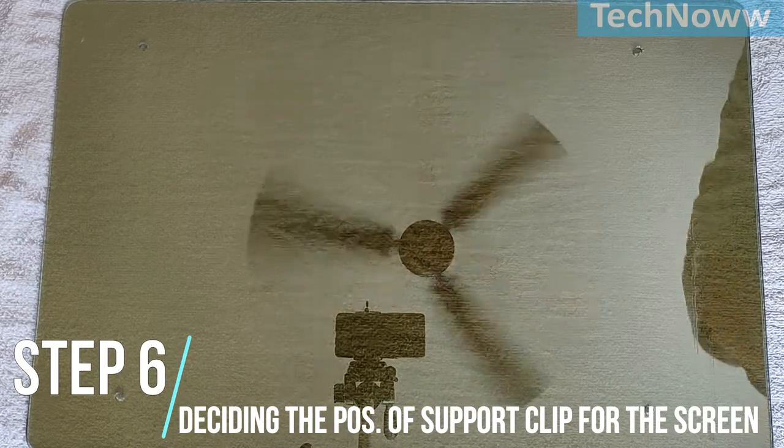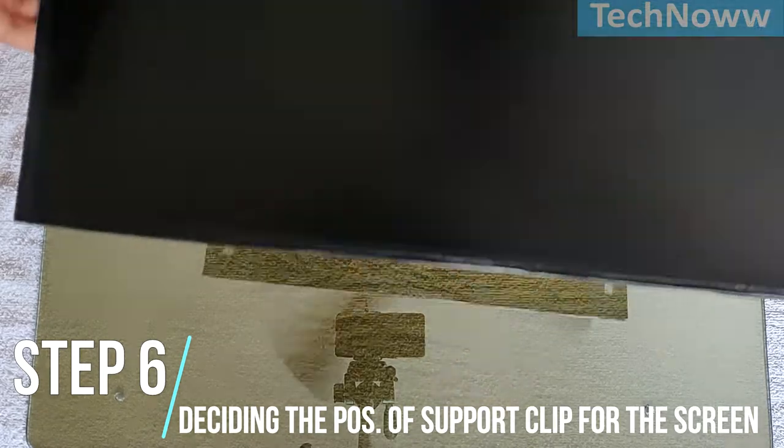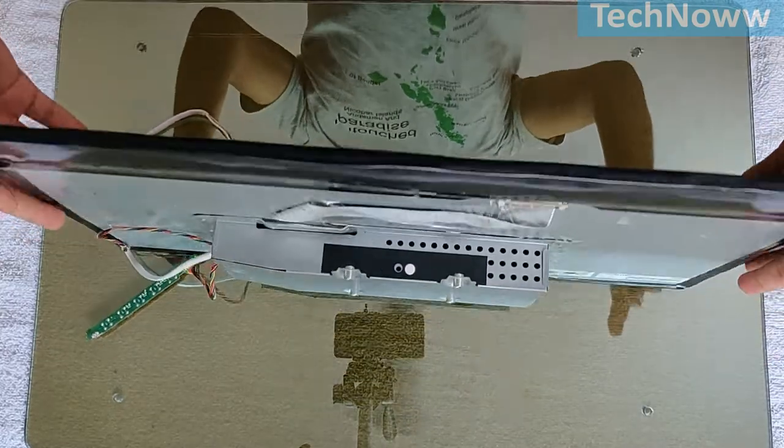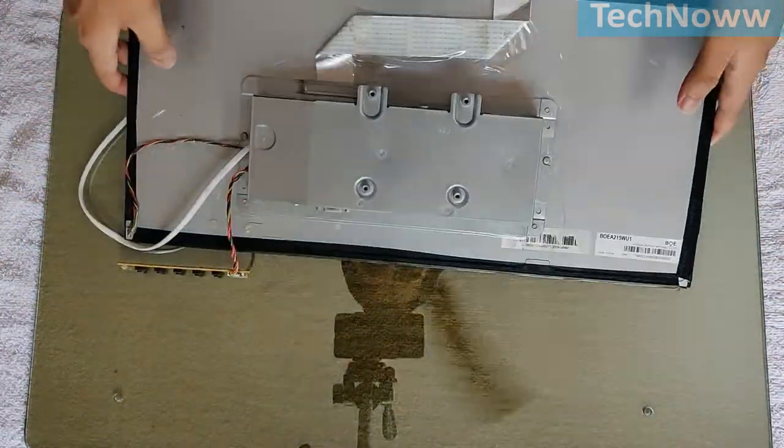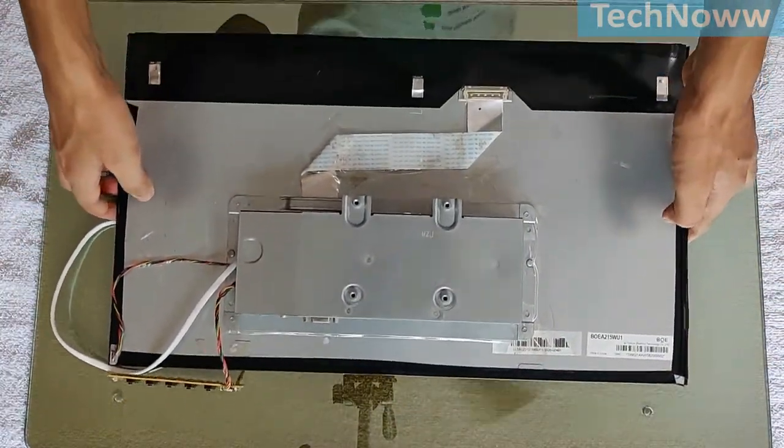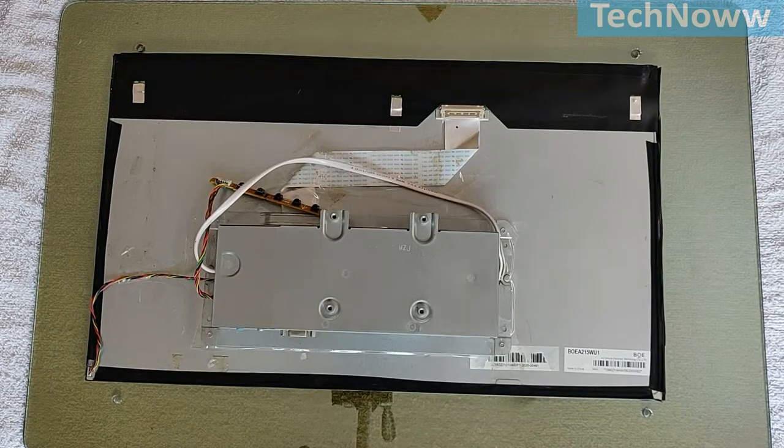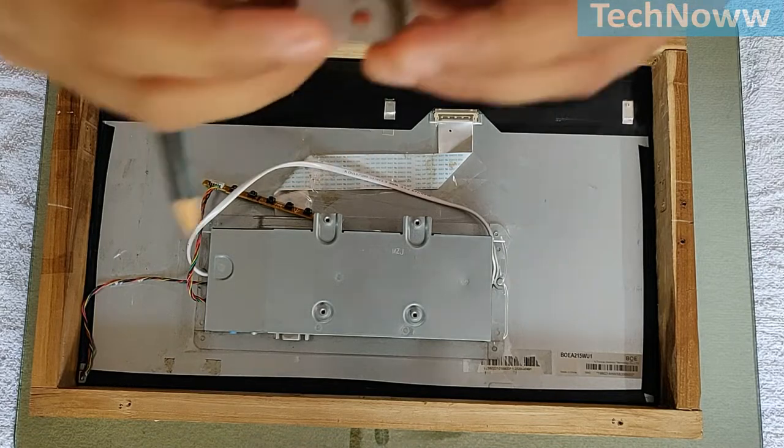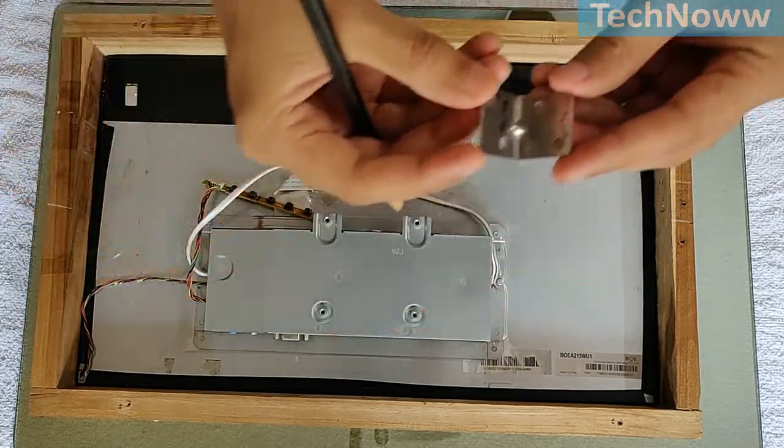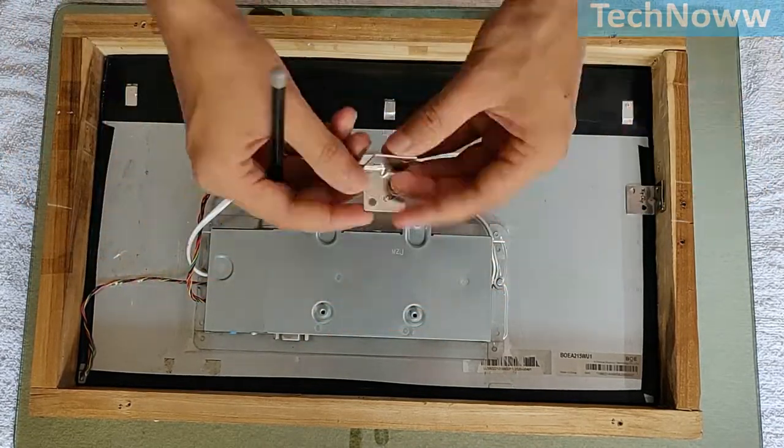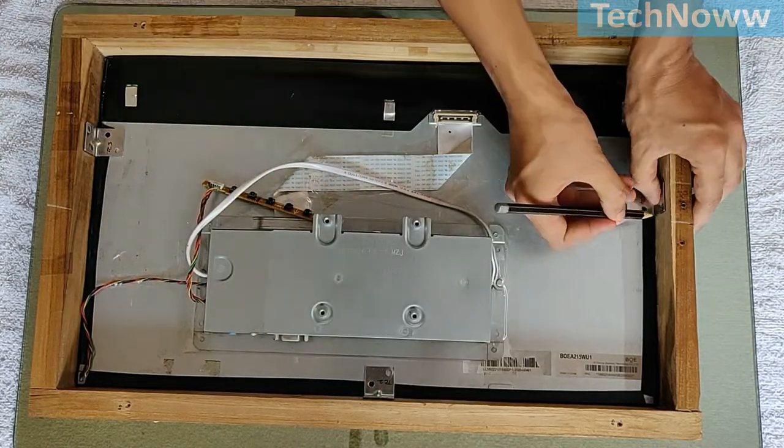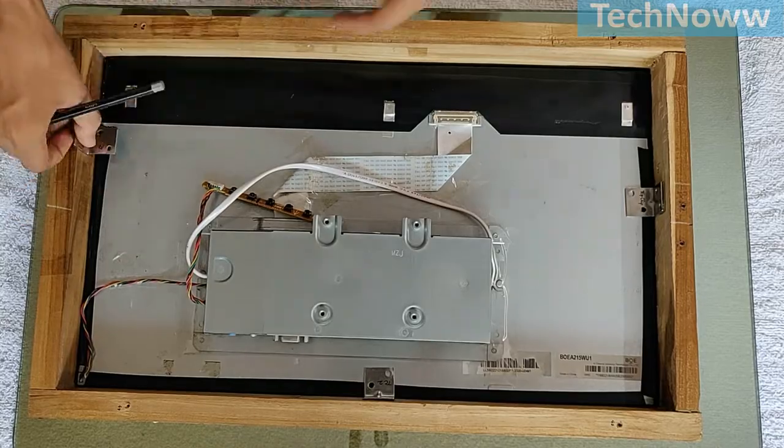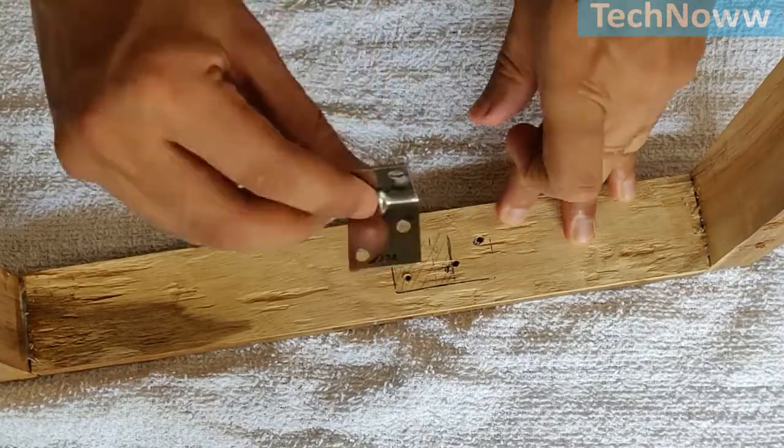Step 6: Deciding on the position of the support clips for the screen. As of now, we have the mirror glass and the frame ready. Now we need some sort of support to hold the screen in position. Position the screen on the glass and place the frame over it gently. Mark the position of the L clips on the back side of the frame. In my case, I have used 3 clips. Pick up the frame and fasten the L clips on it.